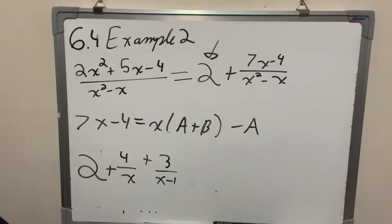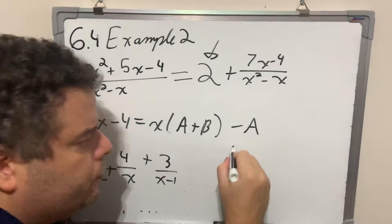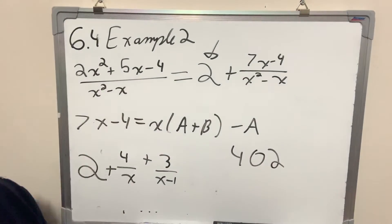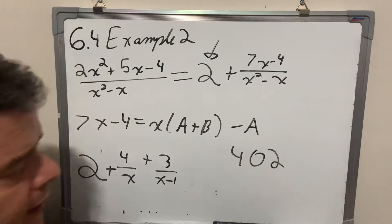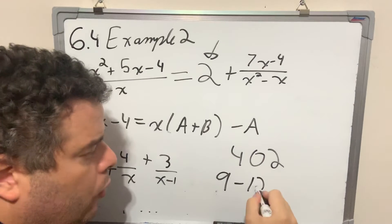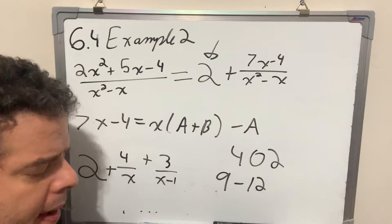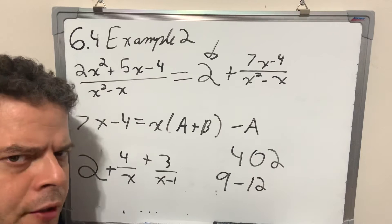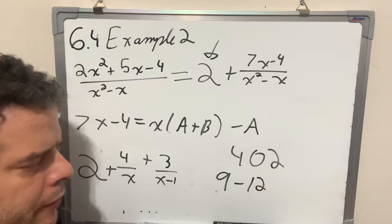Now for homework, page 402, I want you to do from 9 to 12. Only for the factoring patterns you will see there are just grouping and standard form, just trinomials.